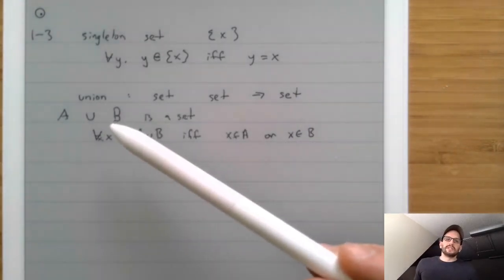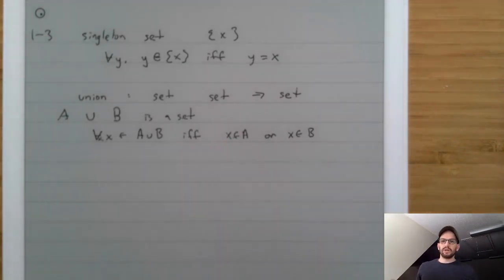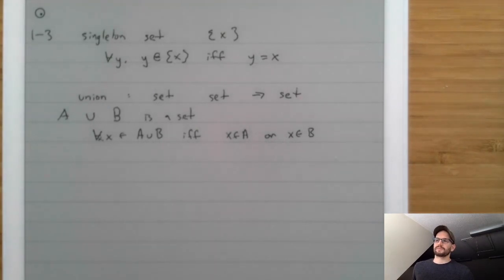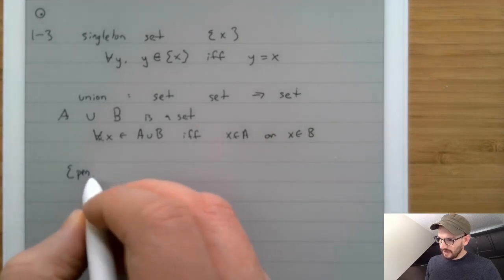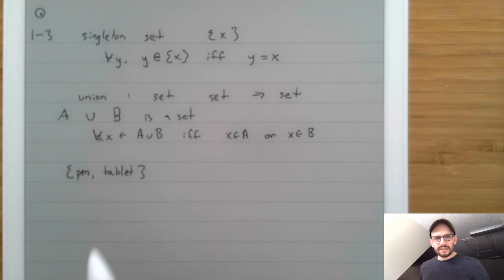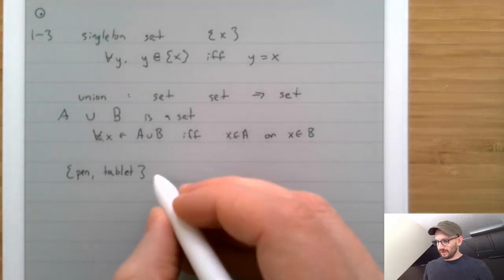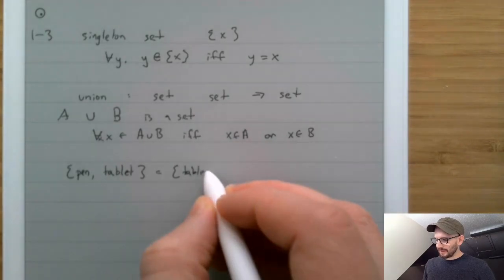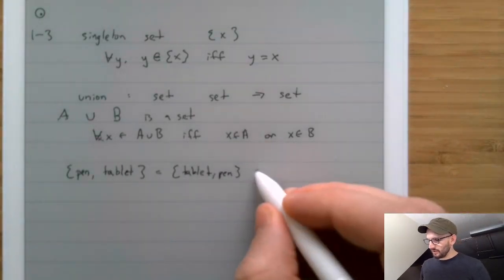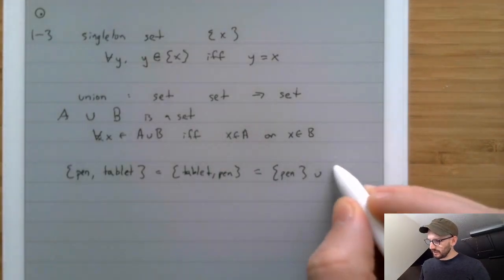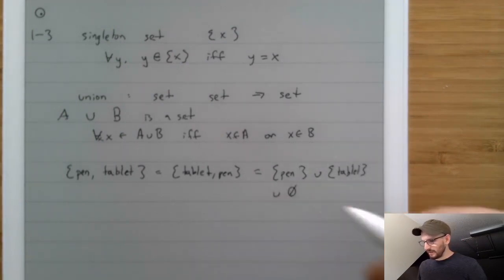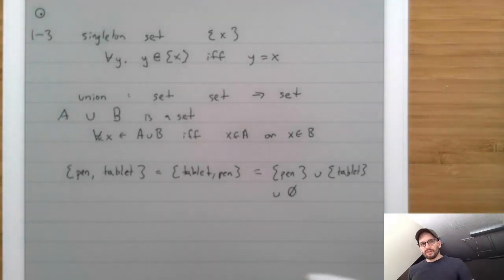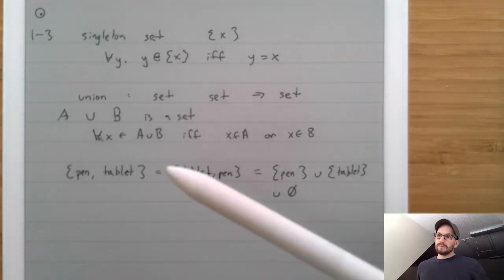Essentially, union takes the idea of 'or-ness' and puts it inside our set notation. Something interesting: we can go back to that original set, {pen, tablet}. It turns out this set is equal to yet another set. We already established it's equal to {tablet, pen}. But there's another set it's equal to: the singleton set of pen unioned with the singleton set of tablet — {pen} ∪ {tablet} — and for good measure, we can also union it with the empty set.